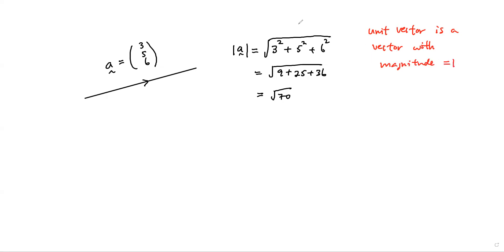So let's say I want to find a unit vector of a. Right now we can see that the magnitude of a is square root of 70.